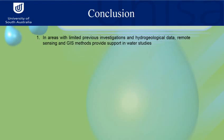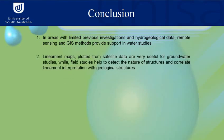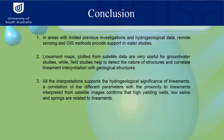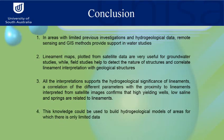In summary, in areas with limited previous investigation and hydrogeological data, remote sensing and GIS methods provide strong support in water studies. Lineament maps derived from satellite data are very useful for groundwater studies, while field studies help detect the nature of structures and correlate lineament interpretation with geological structures. The hydrogeological significance of lineaments is confirmed by the correlation of different parameters with proximity to lineaments, showing that high-yielding wells, low-salinity water, and springs are related to lineaments. This knowledge could be used to build hydrogeological models for areas with only limited data.